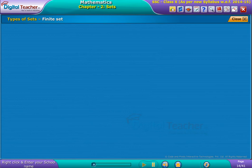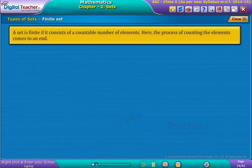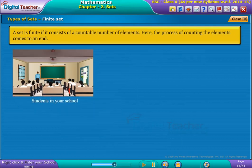Now let us discuss finite set. A set is finite if it consists of a countable number of elements. Here, the process of counting the elements comes to an end. For example, the number of elements in set L shown on screen.